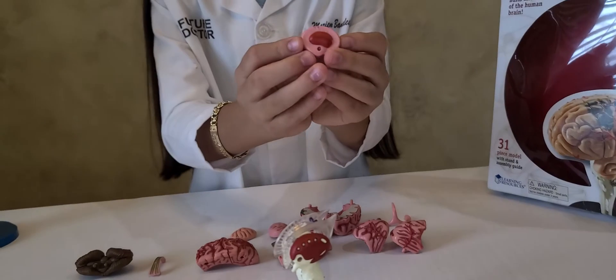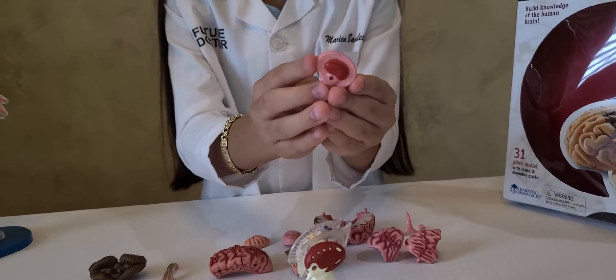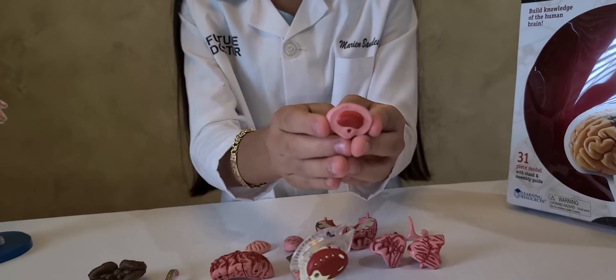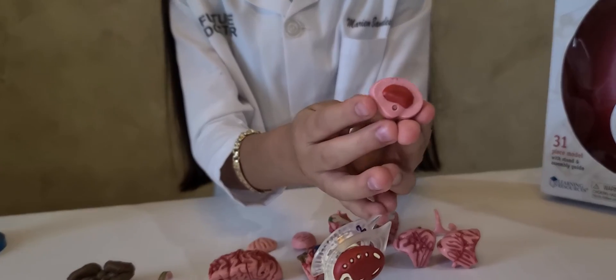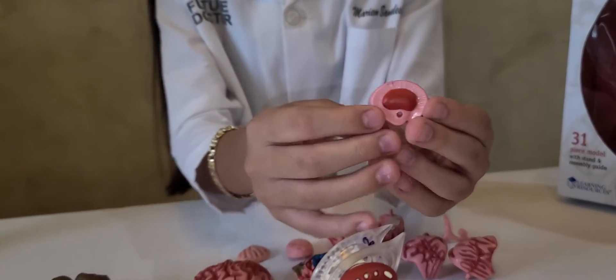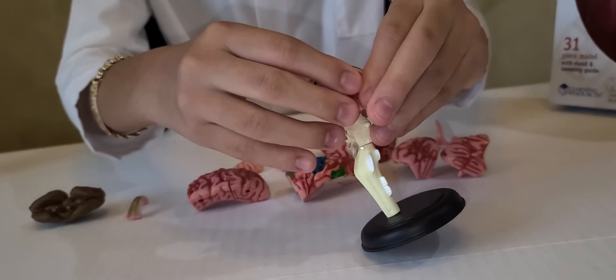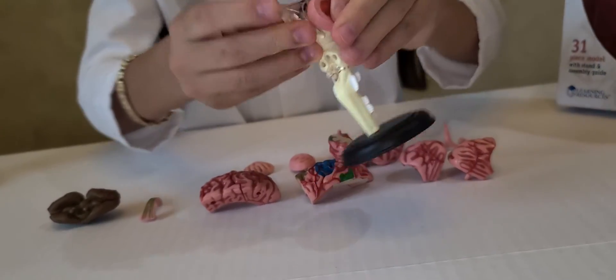The next piece is called the internal capsule and the internal capsule contains fibers that connect the primary sensory areas of the cortex with the rest of the nervous system. This piece I will place it on here.